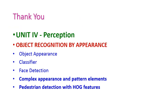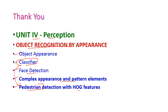So far, we have seen object recognition by appearance from the 4th unit on perception. In this class, we covered object appearance, classifier, face detection, complex appearance and pattern elements, and pedestrian detection with HOG features. The same classifier can be used for face detection as well as for detecting pedestrians. In the next class, we will see another important topic from the 4th unit. Thank you.